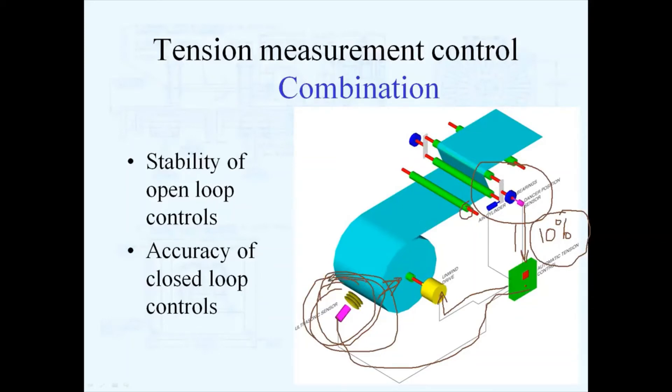The output from the open loop to always have a constant control into your process. That's where you're taking advantage with the combination controller. You're taking advantage of the stability of the open loop and the accuracy of the closed loop.